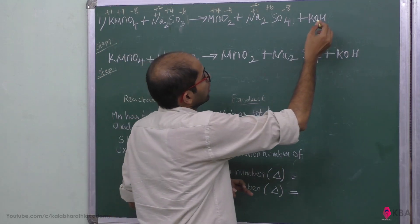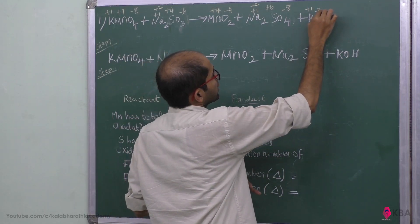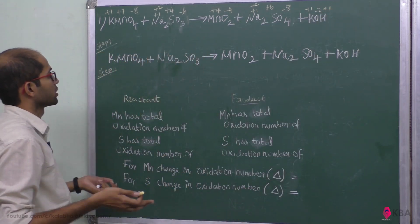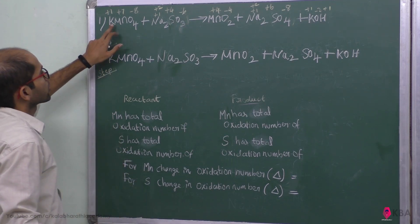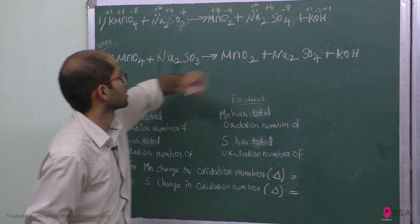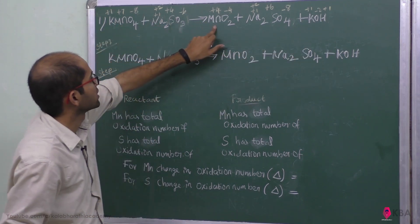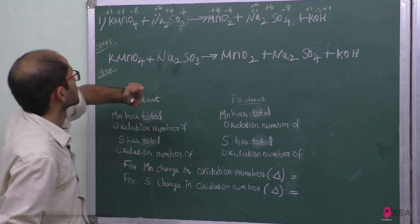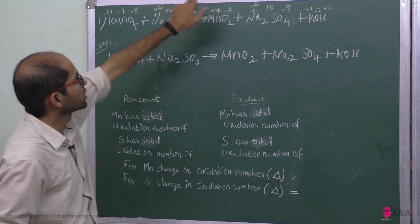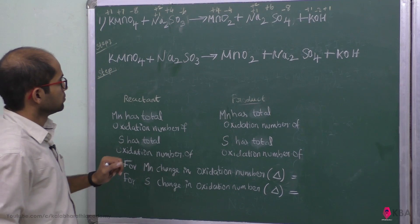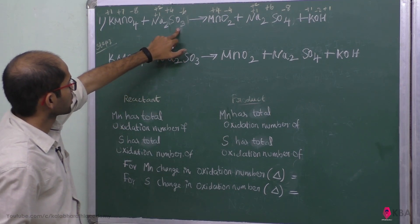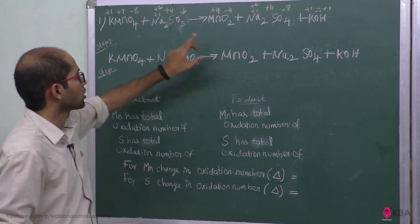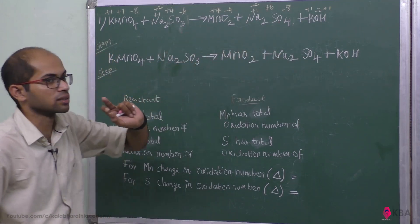For KOH: potassium is plus 1, oxygen is minus 2, hydrogen is plus 1. So plus 1 plus 1 minus 2 equals zero, neutral. We can see that oxygen has minus 2 here and minus 2 in each compound.